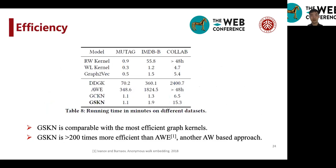And also, we run efficiency tests on our model GSKN. And we can see that GSKN is comparable with the most efficient graph kernels, like the Weisfeiler-Leman graph kernels, and the GraphVec.